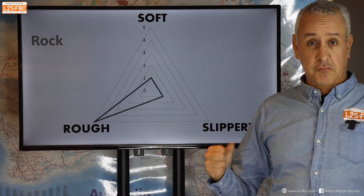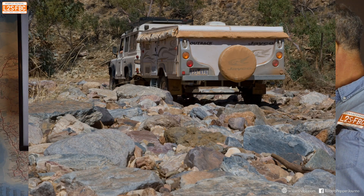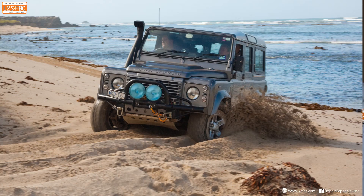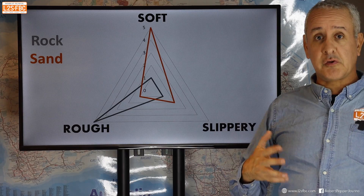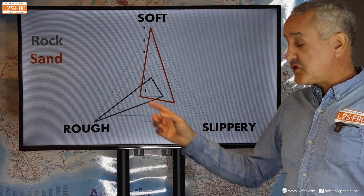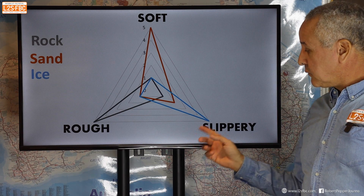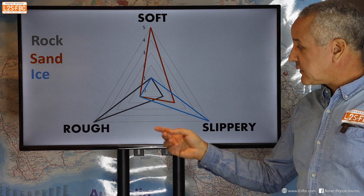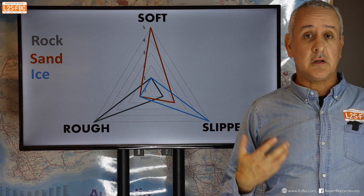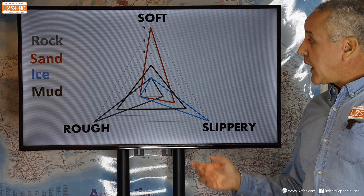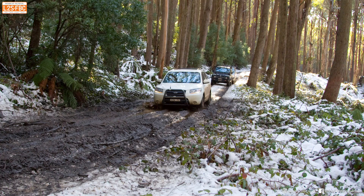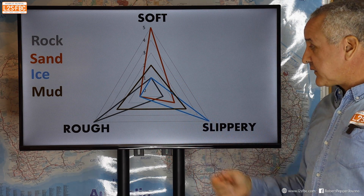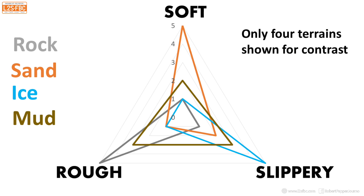Rock is very rough — you wouldn't call it soft and you certainly wouldn't call it slippery in most cases. Sand is often very soft, not really slippery, and generally not that rough. Ice is super slippery — the slipperiest terrain you're ever likely to find — unlikely to be rough and unlikely to be soft. Mud is probably a combination of all of them: a little rough but not as rough as rock, certainly a bit soft, and certainly a bit slippery. That's how you need to start thinking of terrains.